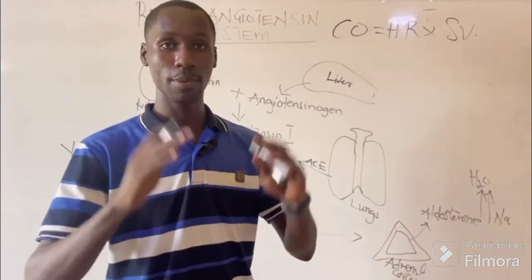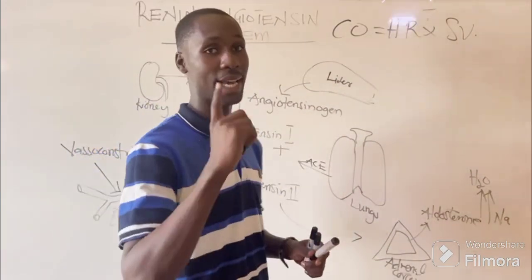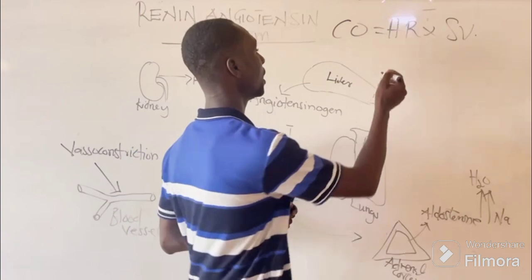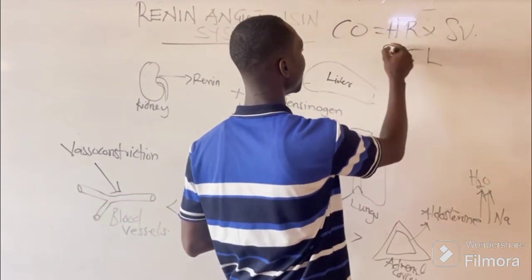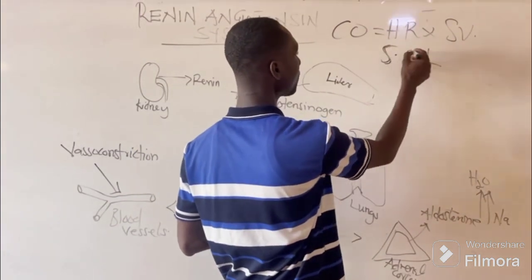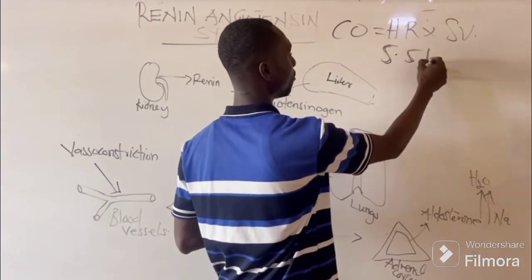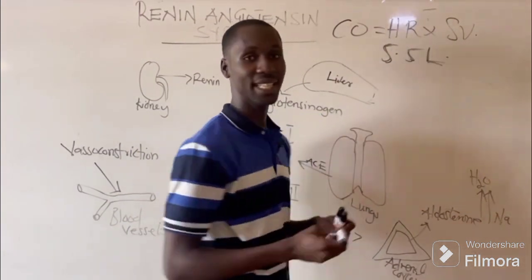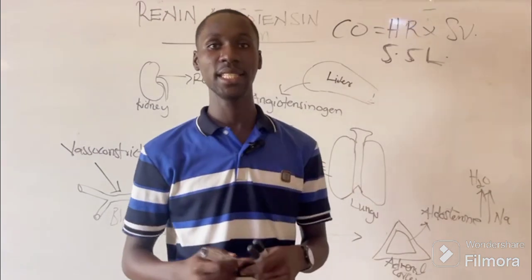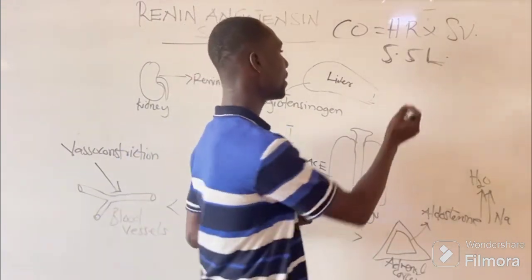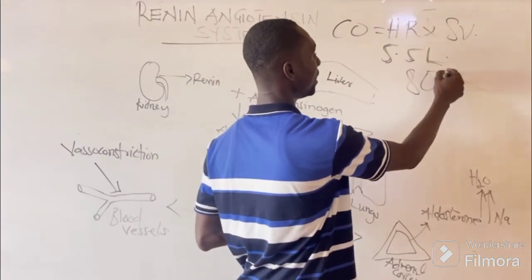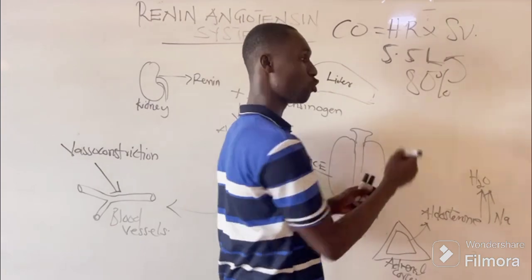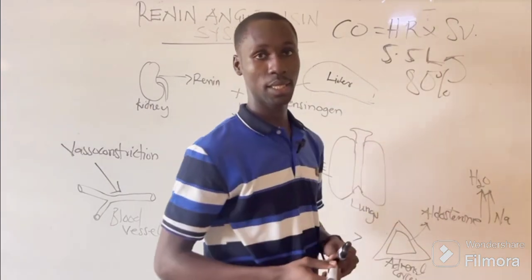The normal cardiac output per one cardiac cycle is 5.5 liters. And 80% of these 5.5 liters goes to the kidney.